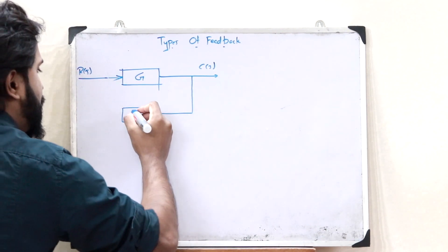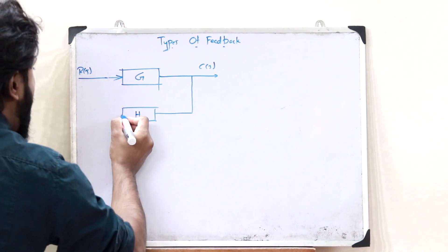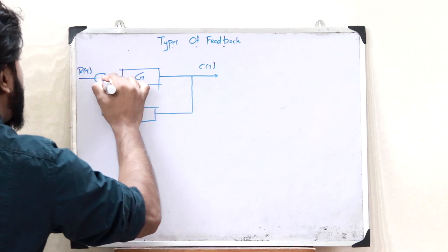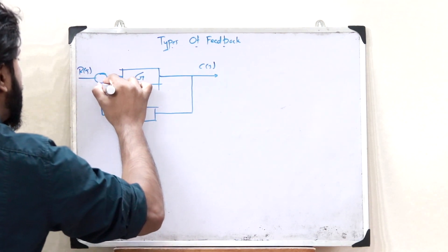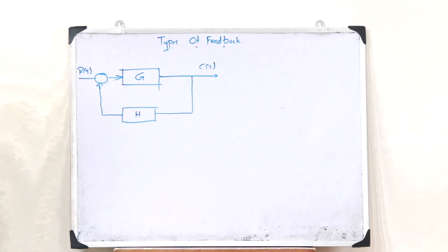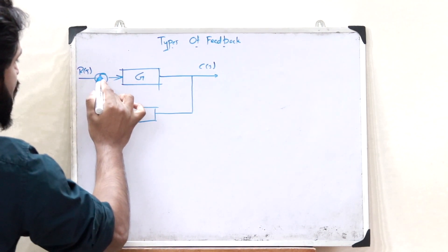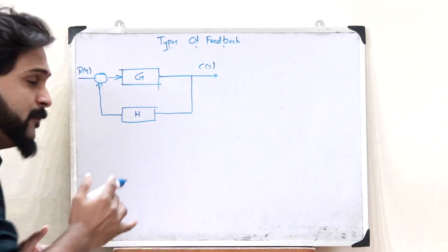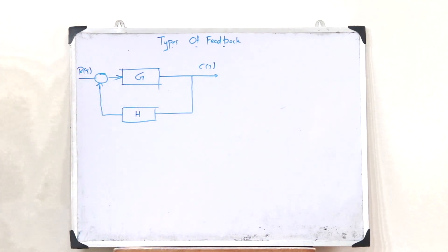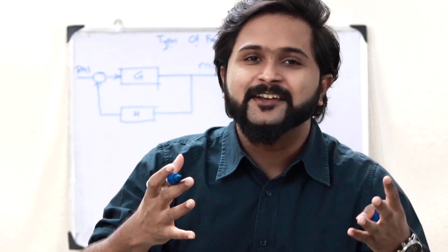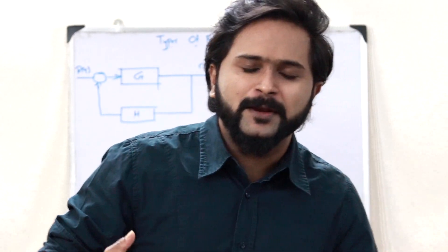Let a feedback of say H be provided here. When we provide this feedback back to this particular signal, two things can happen: either the feedback can be added here or the feedback can be subtracted. So based on this, there are two types of feedbacks that can be provided — the first one is positive feedback and the second one is negative feedback.